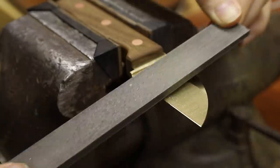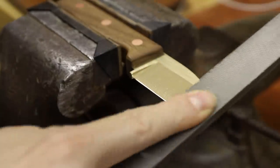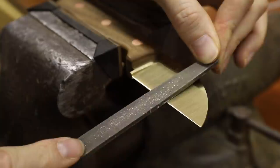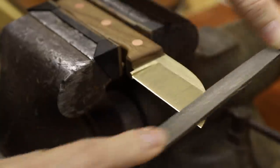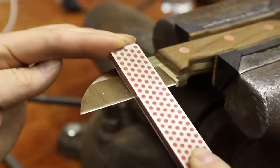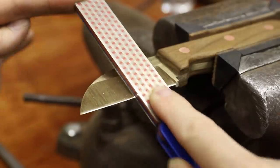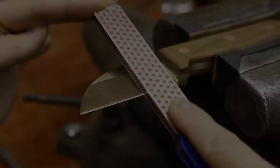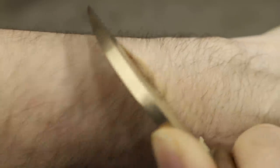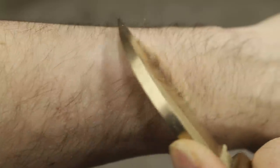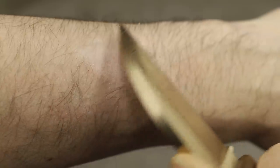The final step was to put an edge on the blade, and to do that I used some files and a diamond coated sharpening steel. I really only expected this knife to be sharp enough to open boxes, but I was really surprised by how well the aluminum bronze was able to hold an edge. The blade was still hair shaving sharp after testing it by cutting some pieces of paper.